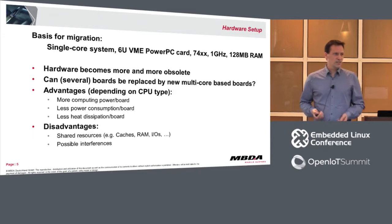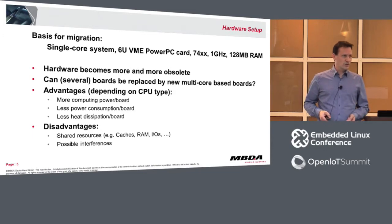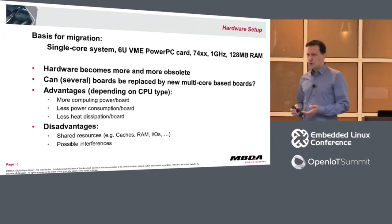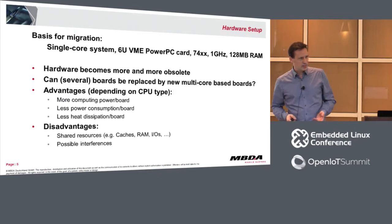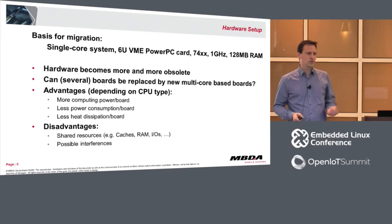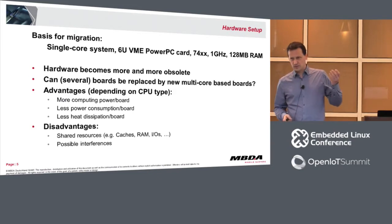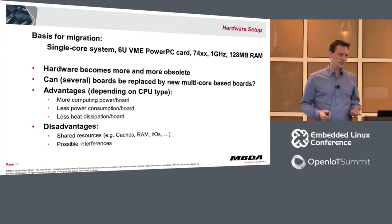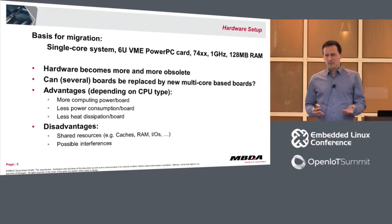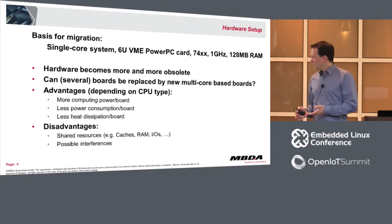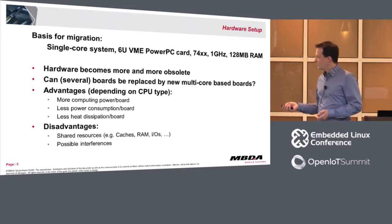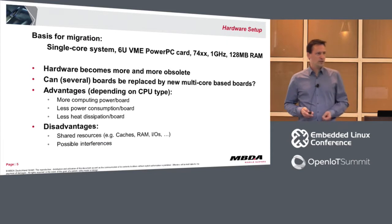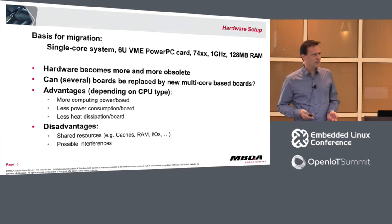There are some disadvantages compared to multiprocessor systems. In a multiprocessor system, each processor has its own resources — caches, memory, I/Os. On multicore processors, these resources are shared. So what you can expect are interferences.